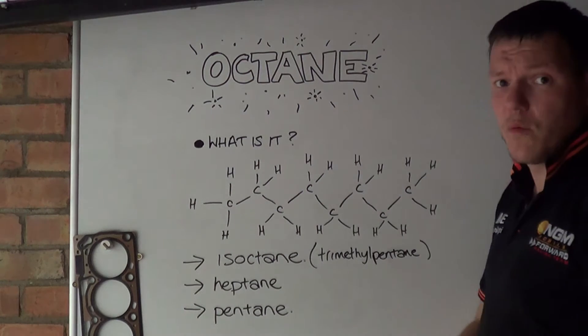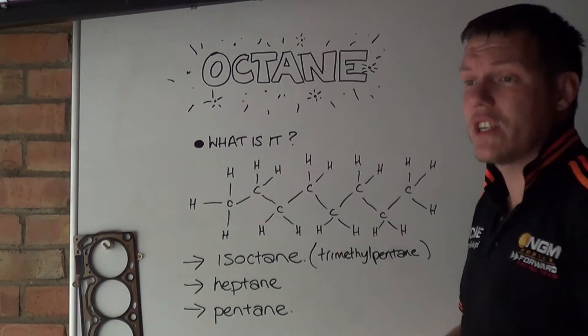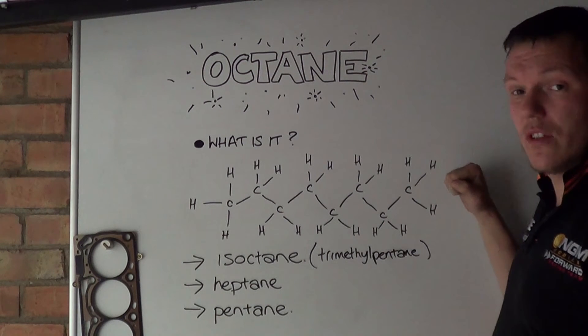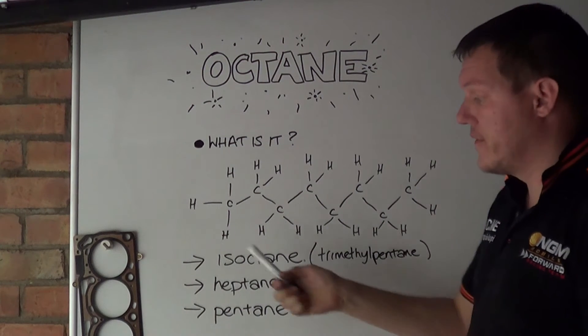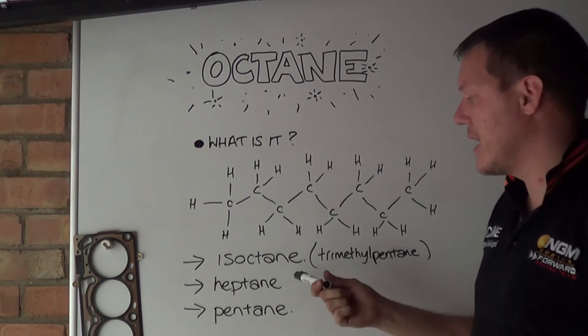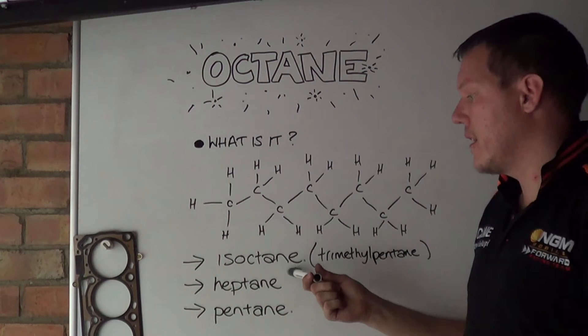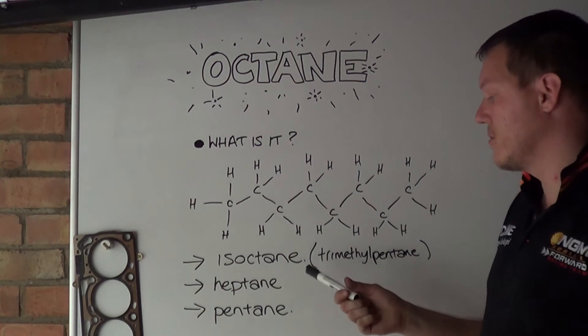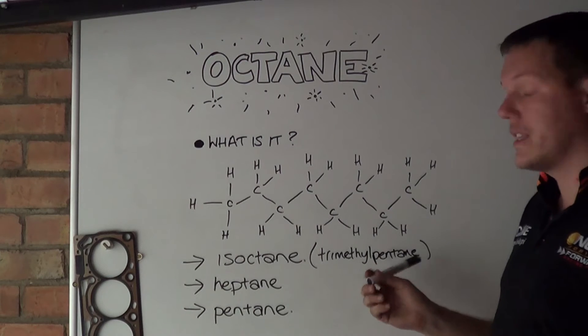So, octane, what is it? Well, an octane is actually a family of compounds which are hydrocarbon chains that look something like this. There are a few different ones, actually loads of different ones, but the ones mainly used in fuel mixes are iso-octane, heptane, and pentane. And the iso-octane is the tri-methyl pentane.